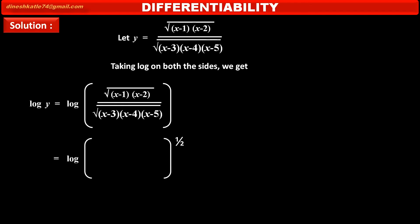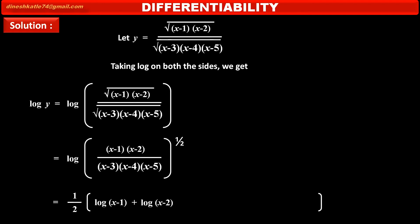Taking the square root — which means power half — common from numerator and denominator, we get: half into log of [(x minus 1)(x minus 2) upon (x minus 3)(x minus 4)(x minus 5)]. By using the law of product and law of exponent of logarithm, we can write: log(x minus 1) plus log(x minus 2) minus log(x minus 3) minus log(x minus 4) minus log(x minus 5).